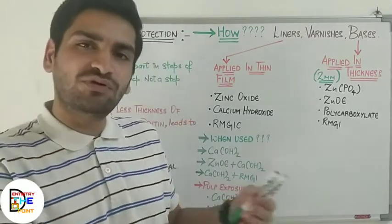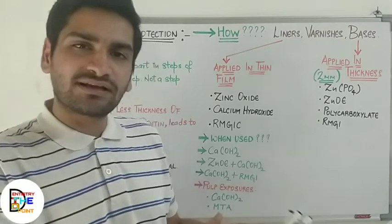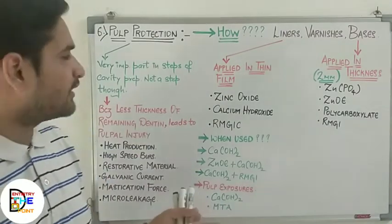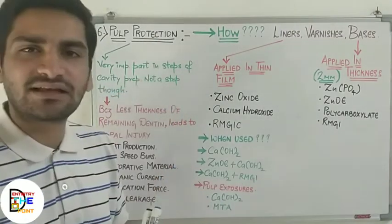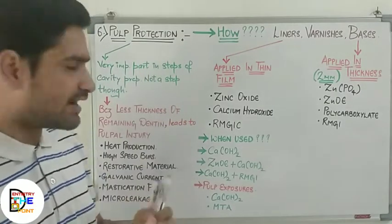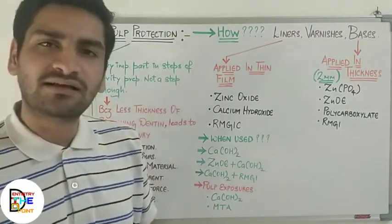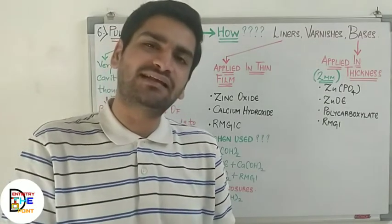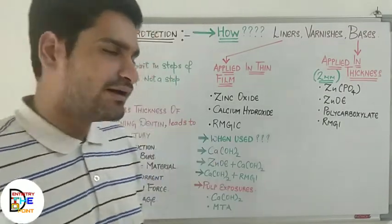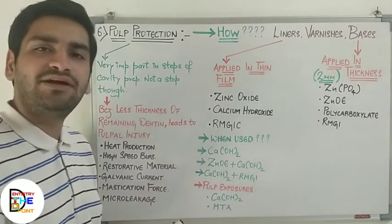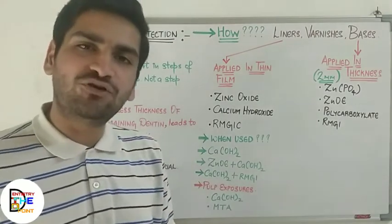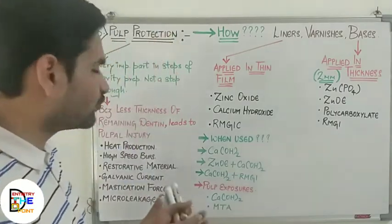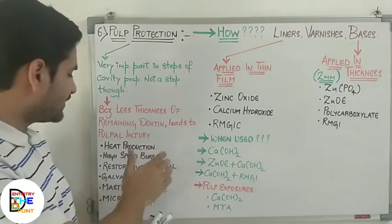Once you are moving on to restoring the cavity after you have finally prepared the whole cavity, it is very much necessary to protect the pulp. There are chances that there might be micro leakage or causation of secondary caries after you have restored the teeth. While preparing the cavity, there are also some chances that you may injure the pulp or expose the pulp due to various reasons.